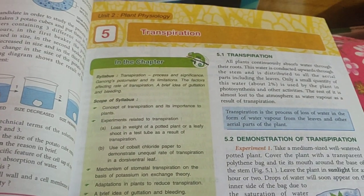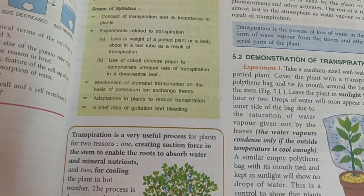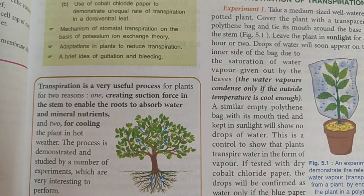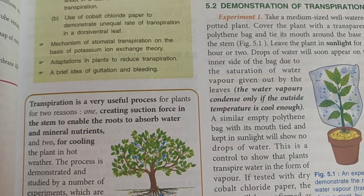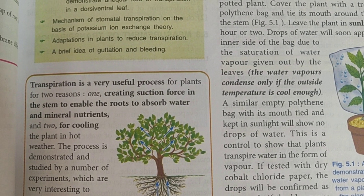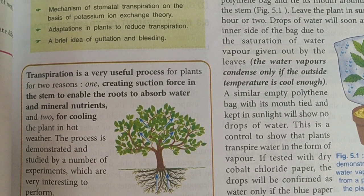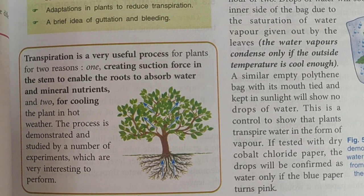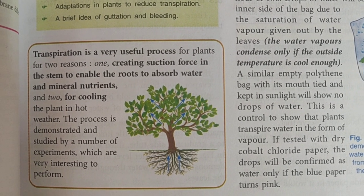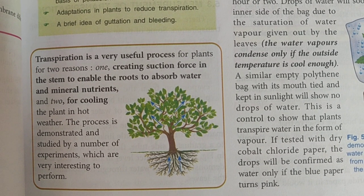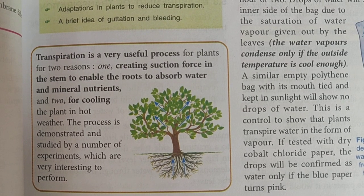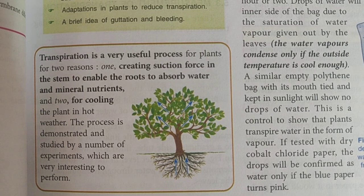Transpiration is a physiological process and is very useful for plants. This is somewhat related to the previous chapter on absorption, because transpiration creates the suction force that helps the roots to absorb water. This absorption of water and minerals allows the plant to prepare its own food by the process of photosynthesis. Transpiration is one such process that aids in the absorption of water.